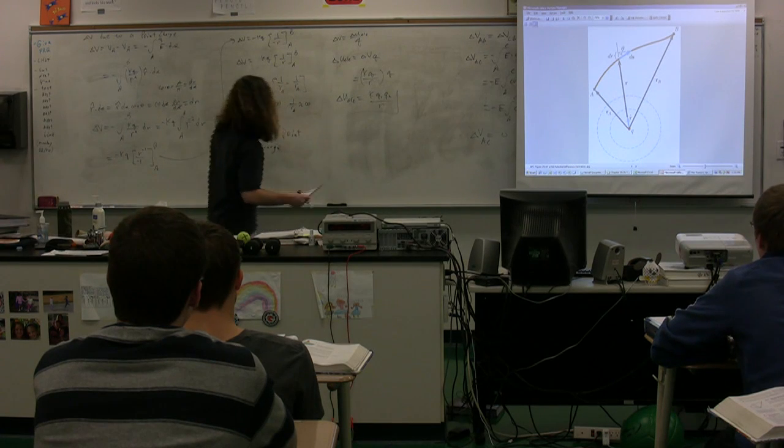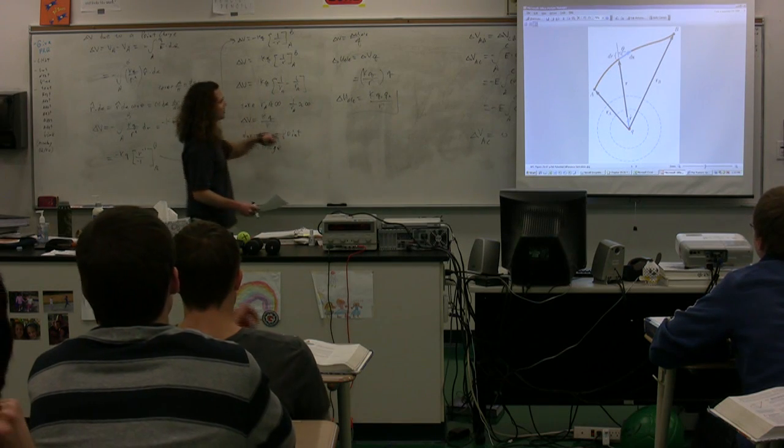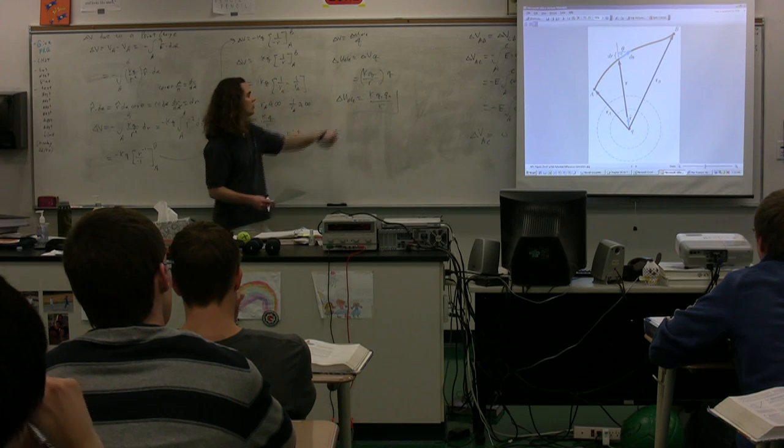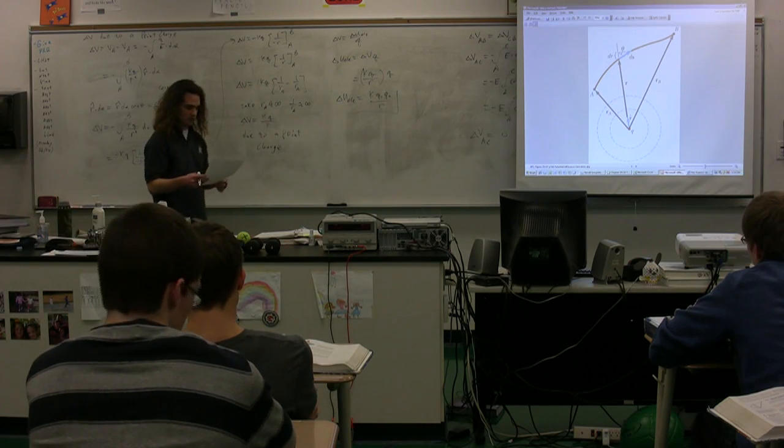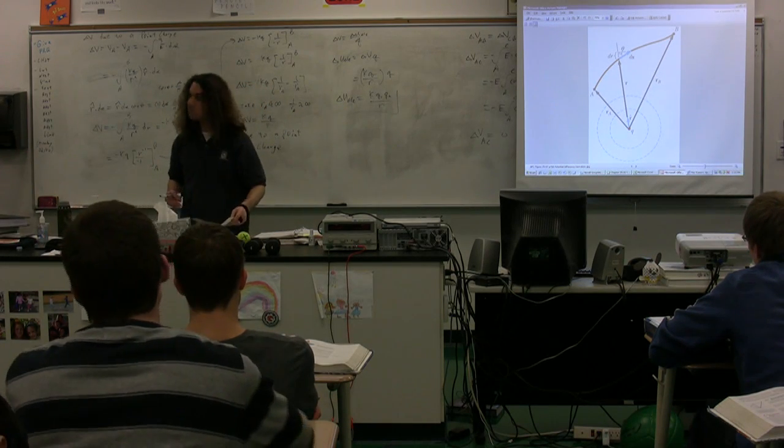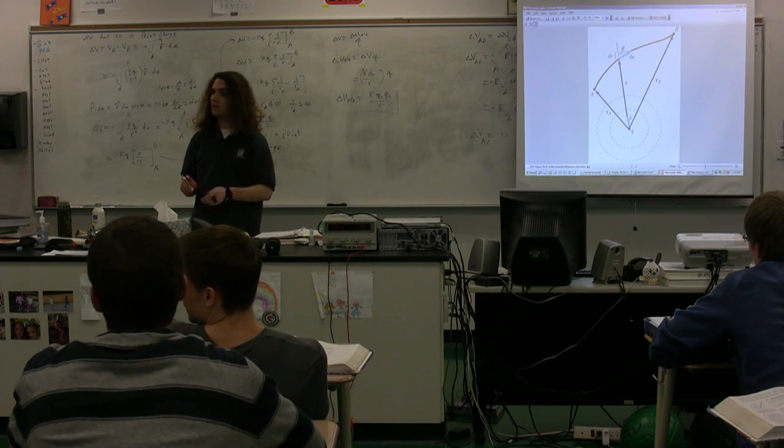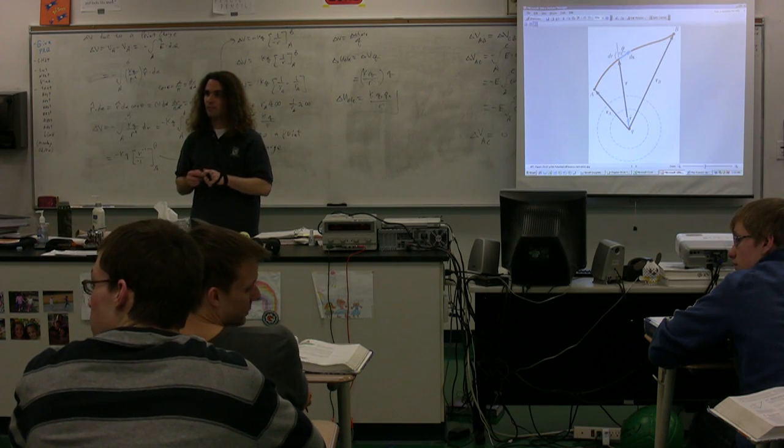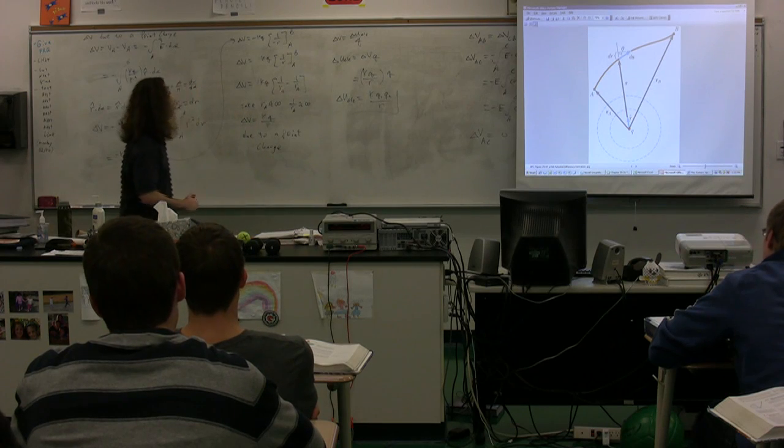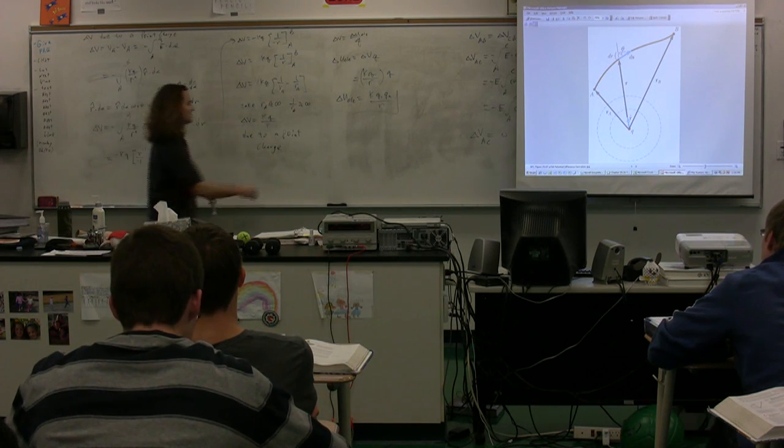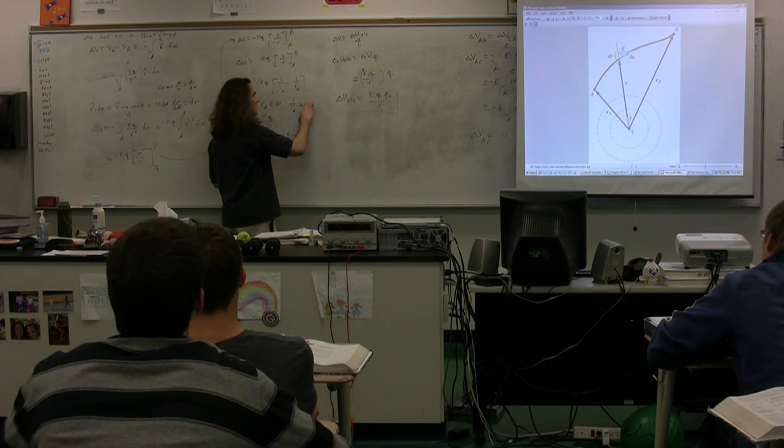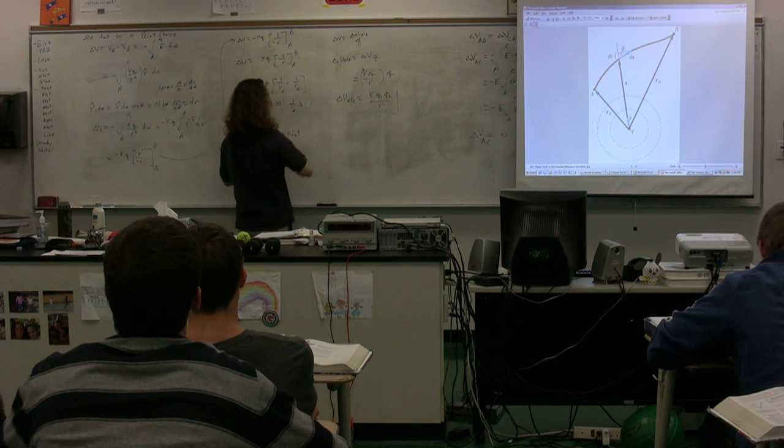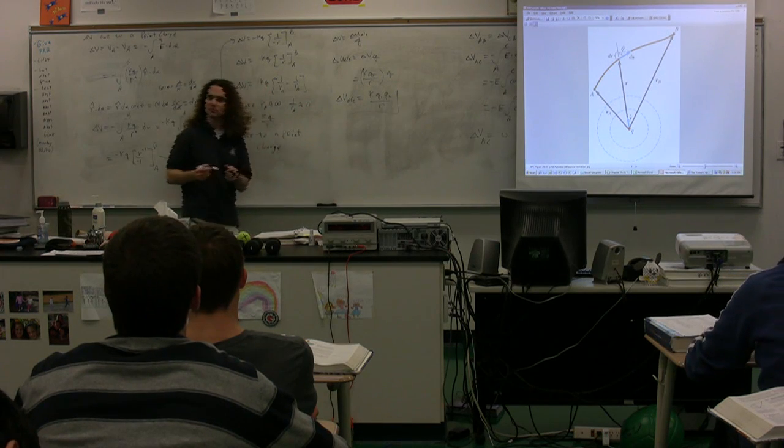Okay. So we've now figured out the electric potential energy due to a point charge and the electric potential difference due to a point charge. All right. Let's... Does that mean 1 over rA is equal to zero? Oh, yes. I got distracted by the negative there. So yes, 1 over something that's approximately infinity is equal to approximately zero.